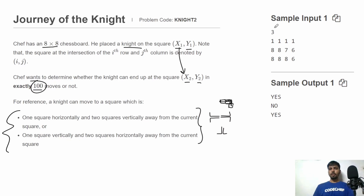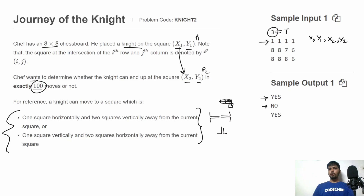For the input structure, we first get the total number of test cases. For each test case we get four integers: x1, y1, x2, and y2. In the output we print 'YES' if the knight can move from point P1 to point P2 in exactly 100 moves, and 'NO' if it cannot. The knight must move exactly 100 moves — not less and not more.